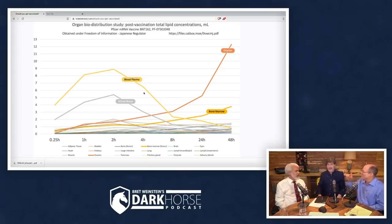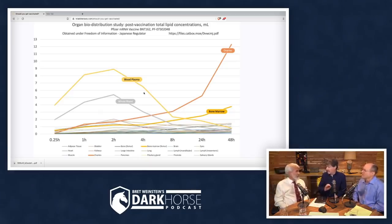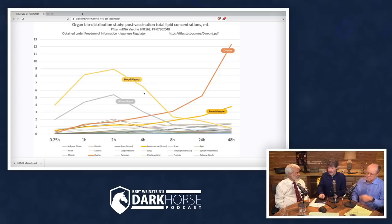The messaging that 'we're all good, nothing to worry about' was inconsistent with these signals that were apparent inside the data — that the regulators knew about. We've got potential short-term and long-term implications in the bone marrow, and short-term as well as potential long-term implications in the ovaries.